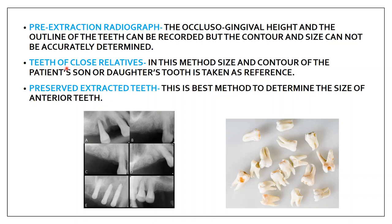The next method is the teeth of a close relative. When the other three methods are not available, the size and contour of the patient's son's or daughter's teeth are taken as reference. The fifth method is preserved extracted teeth — if the extracted teeth are preserved, they can be used for anterior teeth size selection. This is the best method to determine size, though pre-extraction methods are not always practically possible in every patient.